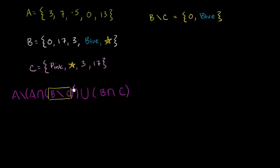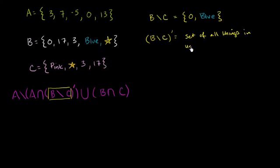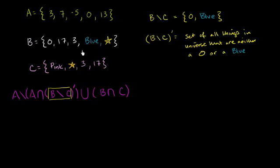Now we're going to take the absolute complement of that — the absolute complement of the set {0, blue}. This is going to be all things in our universe that are neither a 0 nor a blue. I haven't really defined the universe well — we already see that our universe definitely contains some integers, colors, and some stars. So this is the set of all things in the universe that are neither a 0 nor a blue.